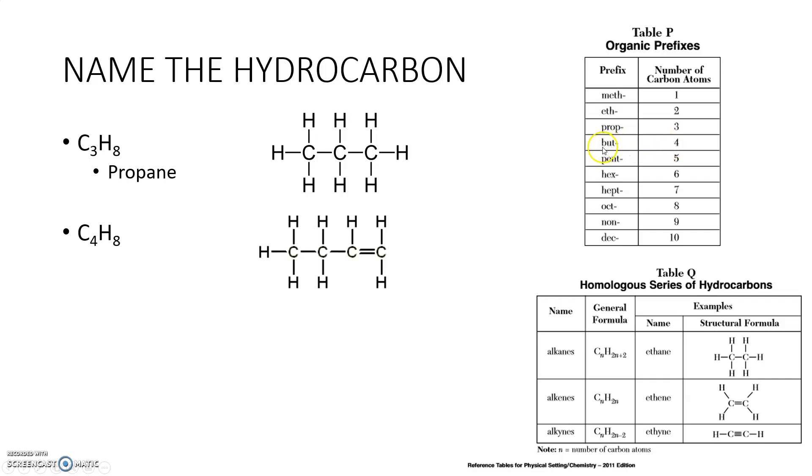Four carbons is but. The ending will be ene. This guy's name is butene. And lastly I have C5H8. Here's his structural formula, a little bit different looking. But if you take a look, I see a triple bond.